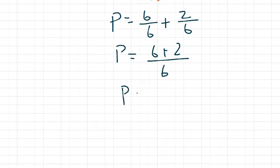P equals 8 over 6. You may also realize that you can reduce this to 4 thirds by dividing each by 2.